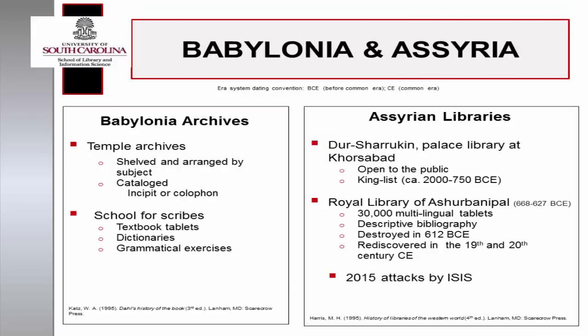Excavated artifacts revealed that Sumerians used clay tablets as a medium to record knowledge. Later, the Babylonians stored the clay tablets on wooden shelves in baskets or jars, filed by subject. These texts were catalogued in one of two ways: incipit, using the beginning or opening words of a tablet, or colophon, using the title of the text and the number of the tablet in a series. Dictionaries and grammar tablets used for training scribes have also been discovered in excavations. Deer-Sarukin, the palace library of Khorsabad, was open to the public and contained hundreds of clay tablets. One text in particular was a king list dating from 2000 BCE to Sargon II, circa 750 BCE.